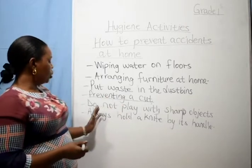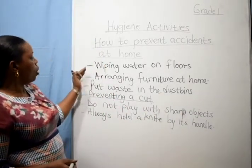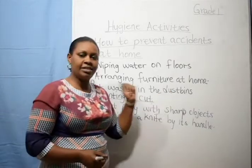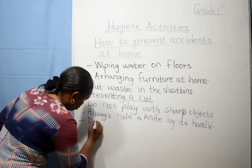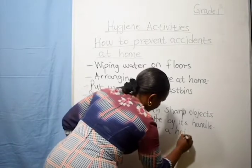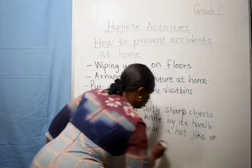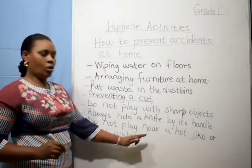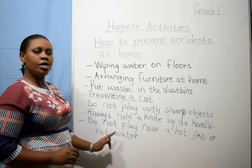To prevent a cut, do not play with sharp objects. Always hold a knife by its handle. When preventing a fall, wipe water on the floors, arrange furniture at home, and put waste in the dustbin. To prevent burns, do not play near a hot jiko or near hot water, because you can be burnt.